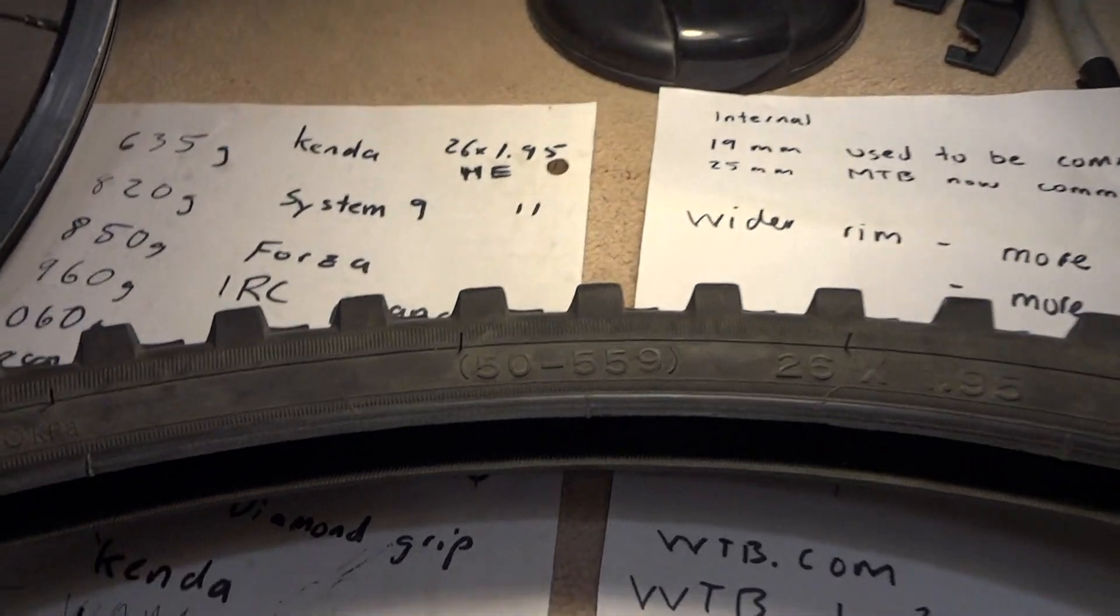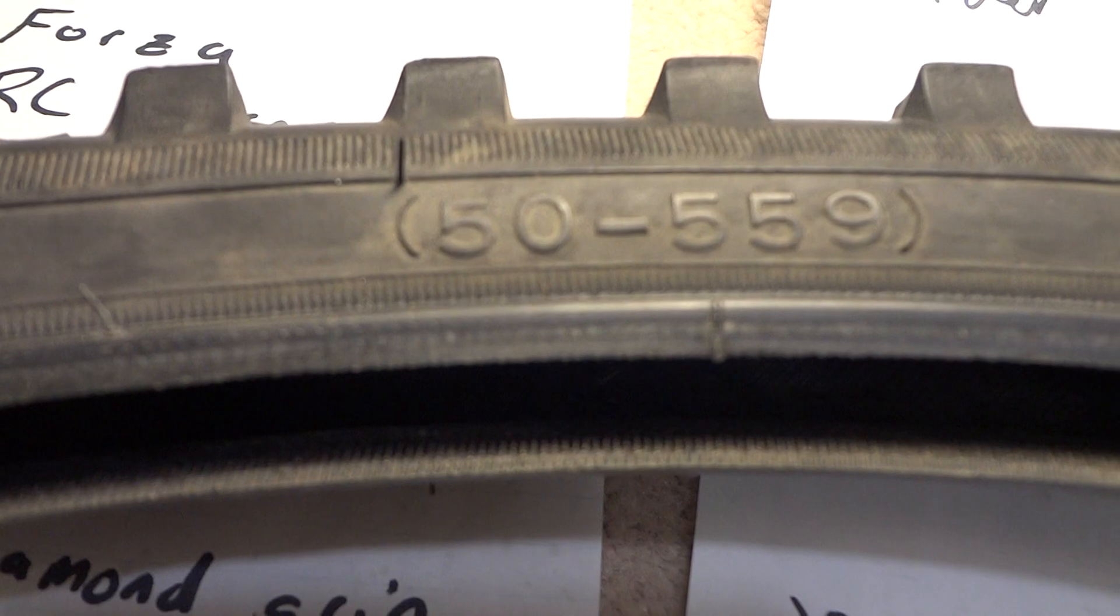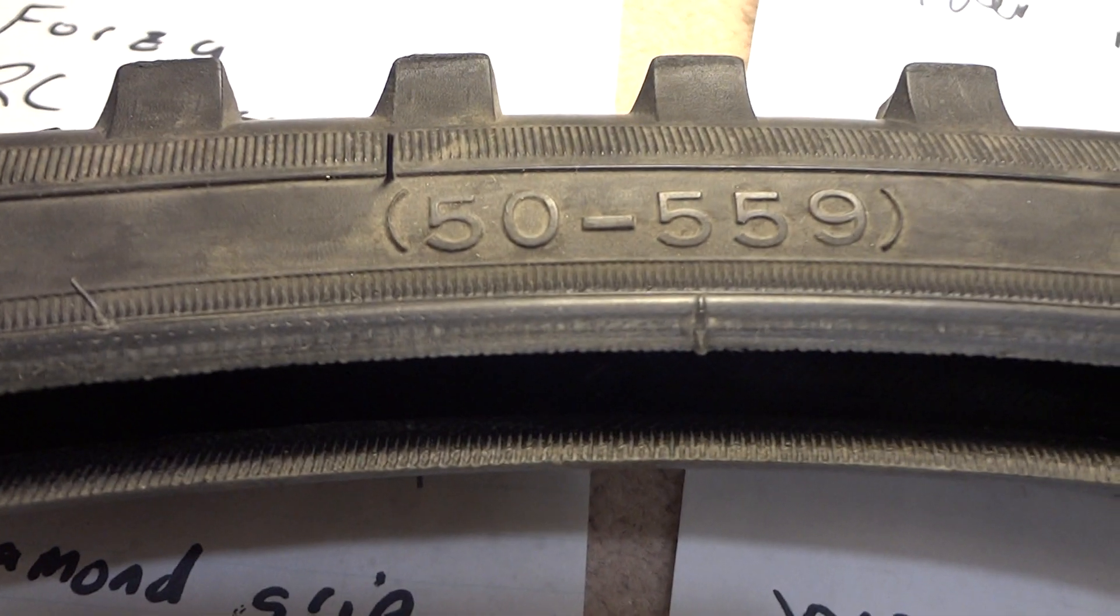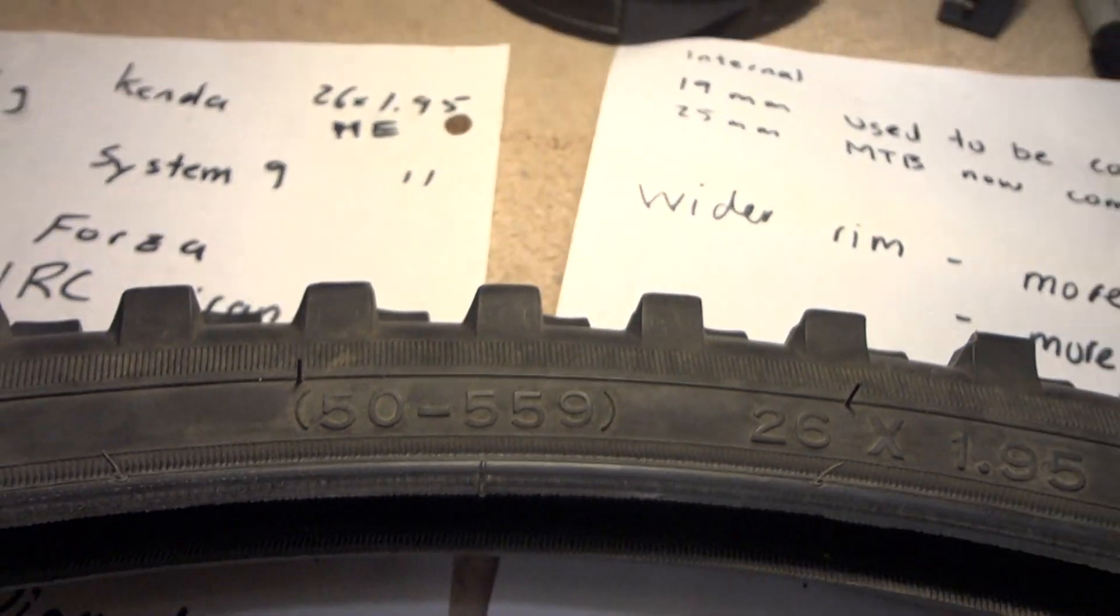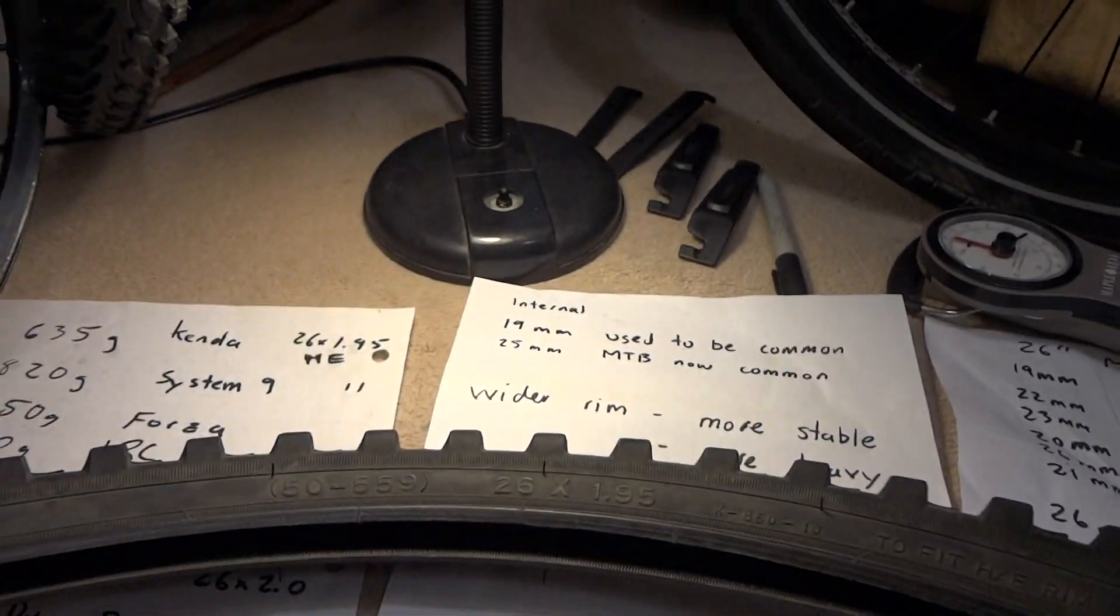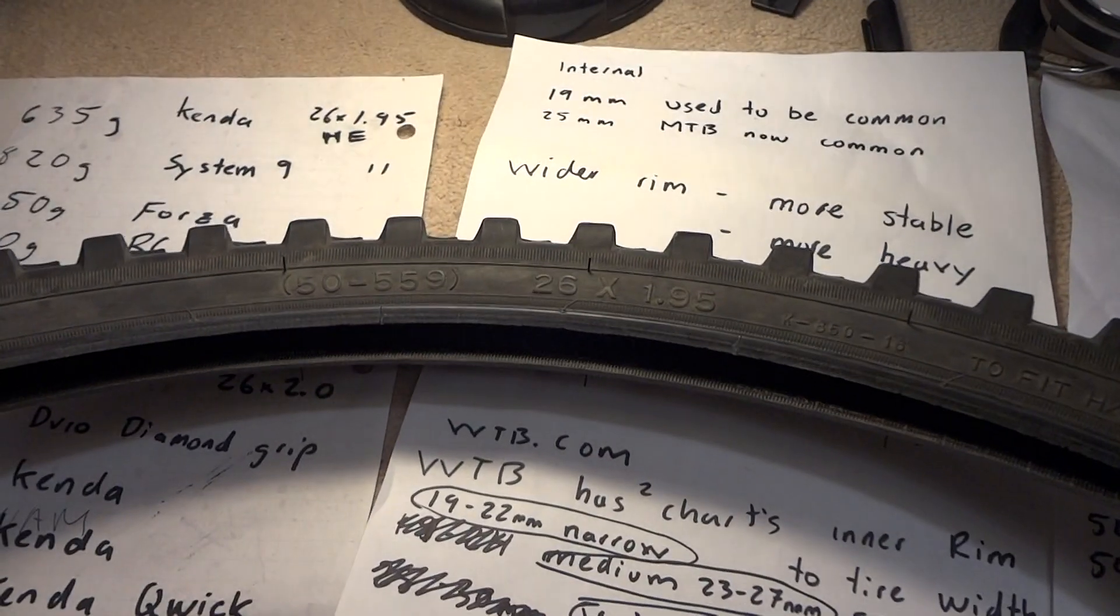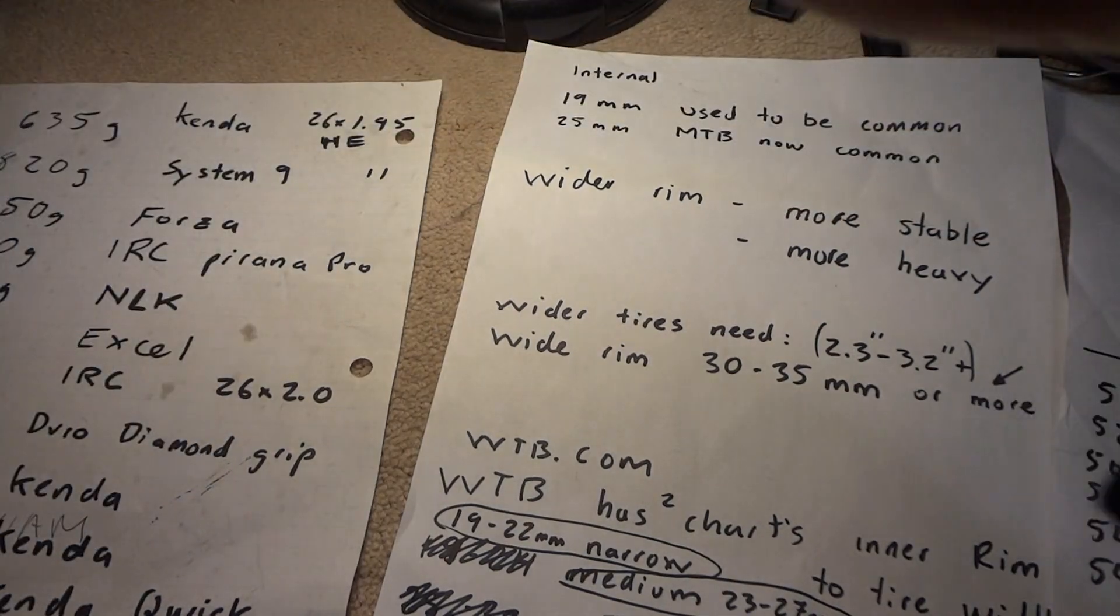It's listed 50 by 559. This is a Kenda mountain bike tire, so apparently what that means, and this is for HE rim, that's what it says. Not really sure what that's supposed to mean, but we did some measurements here. So this is a Kenda mountain bike tire, as you can see, it's kind of for mountain bike.